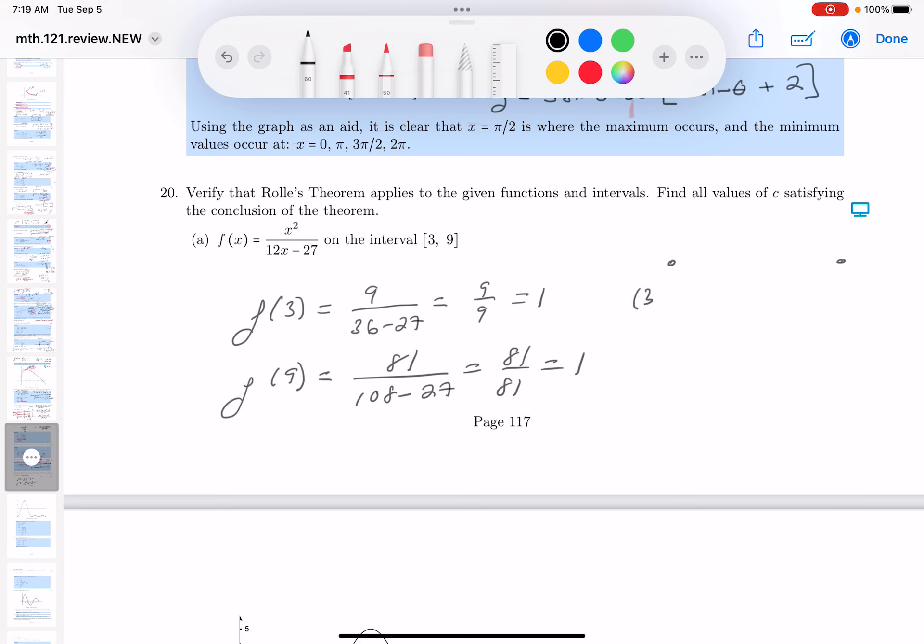Let me just write down what I have over here. The points are going to be 3 comma 1, and the other point is going to be 9 comma 1. Now, certainly there's a line through there, a secant line, and the slope of that secant line is going to be 0. And what they're claiming is I'll be able to find some c along the path. So c is going to be between 3 and 9, such that the derivative is going to be 0.